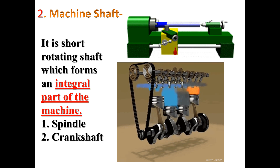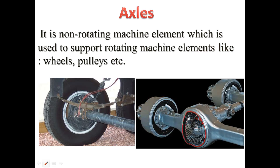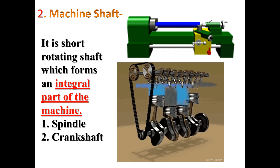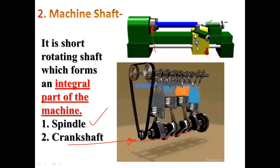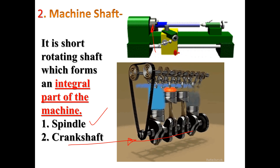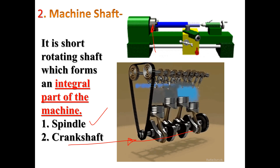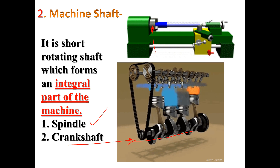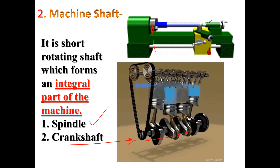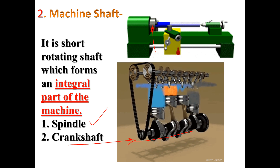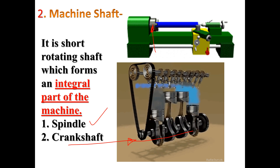In the first diagram, the spindle of a lathe machine is shown — this is a spindle, which is a type of machine shaft. In the second diagram, a crankshaft is shown. The spindle is an integral part of the lathe machine, and the crankshaft is an integral part of its machine, so both are classified as machine shafts.